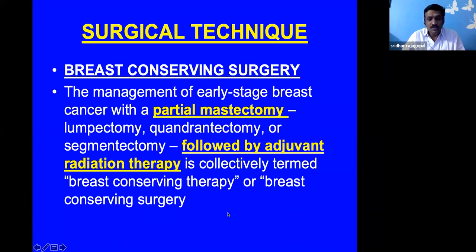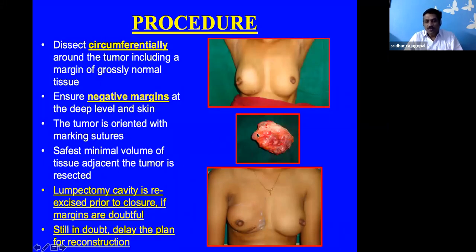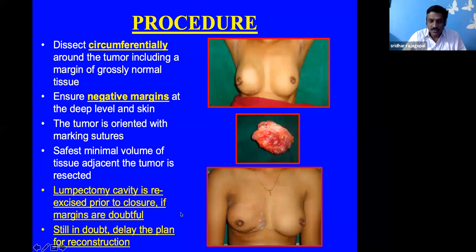Breast conserving surgery essentially means partial mastectomy — lumpectomy, quadrantectomy, or segmentectomy — followed by adjuvant radiotherapy. Curvilinear incisions are made; in the keyhole area, linear incisions are used, and in upper quadrants, radially oriented incisions. Dissection circumferentially around the tumor ensures negative margins with minimal tissue volume removed. If margins are doubtful, the lumpectomy cavity is re-excised prior to closure. If still in doubt, delay the reconstruction — breast conserving surgery aims for reconstruction at the primary site.